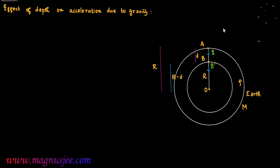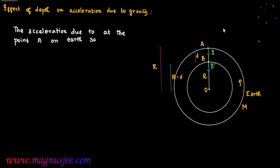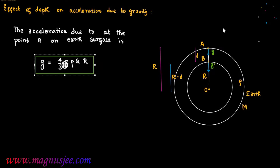At the point B, acceleration due to gravity is g double prime (g''). The acceleration due to gravity at point A on Earth's surface is given by: g = (4/3) π ρ G R, where ρ is the uniform density of Earth's material, G is the gravitational constant, and R is the radius of Earth. This is Equation 1.